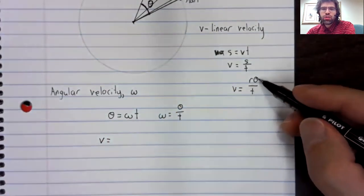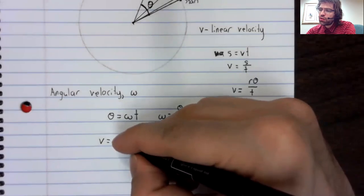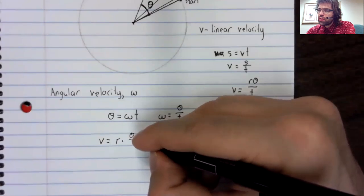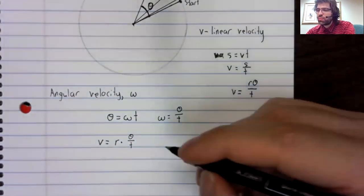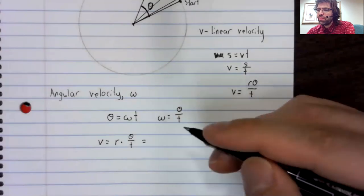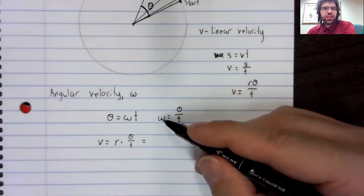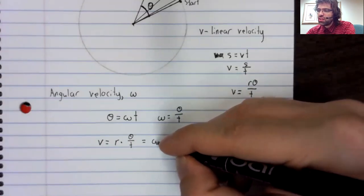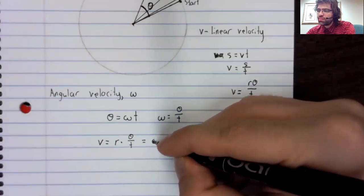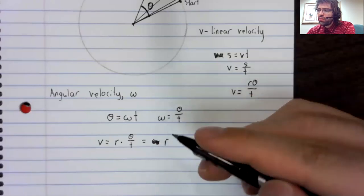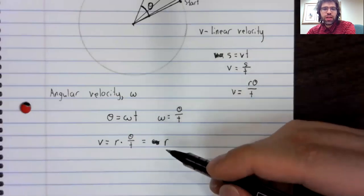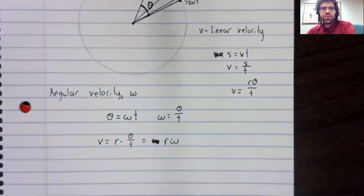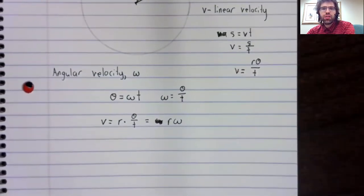R theta divided by T can be rewritten as R times theta divided by T. And theta divided by T is the angular velocity. So V, the linear velocity, equals the radius times the angular velocity.